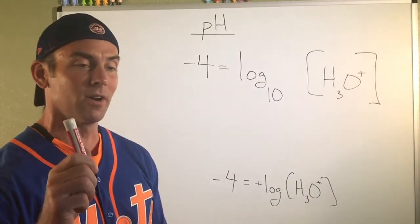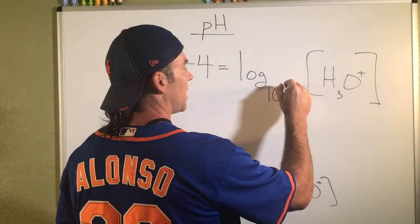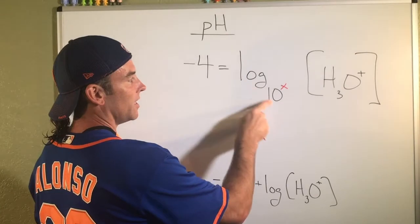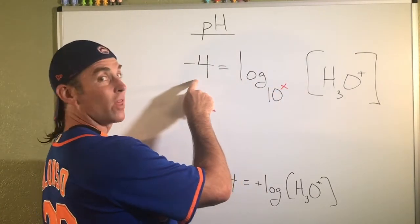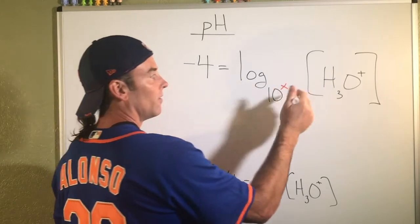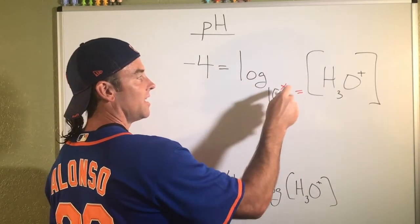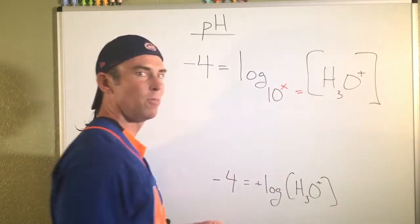So I'm going to use a red marker here and I'm going to show this a little bit more explicitly. So that logarithm right here is saying, well, what is that X? So we know that X is negative four here. But that is telling us that 10 to the negative fourth must be equal to the H3O+ concentration. So let's rewrite that.